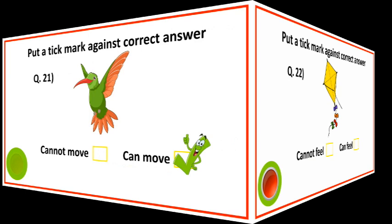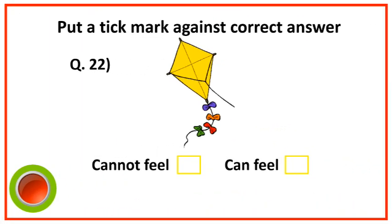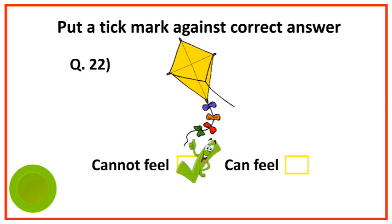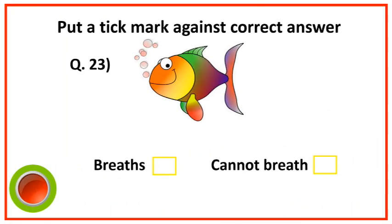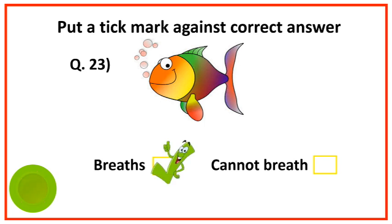Put a tick mark against the correct answer: a kite cannot feel. Put a tick mark against the correct answer: fish breathes.